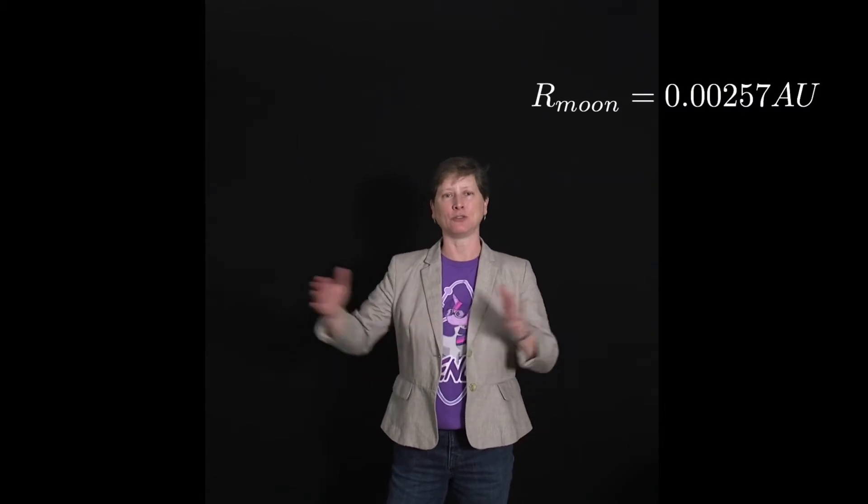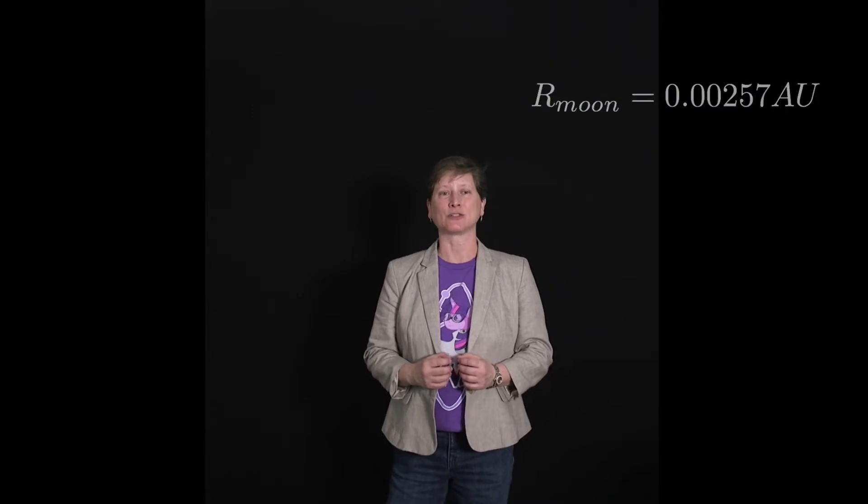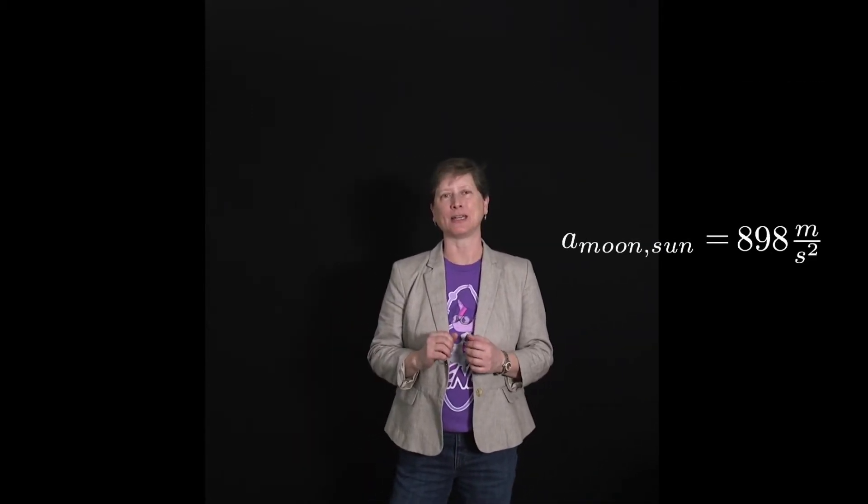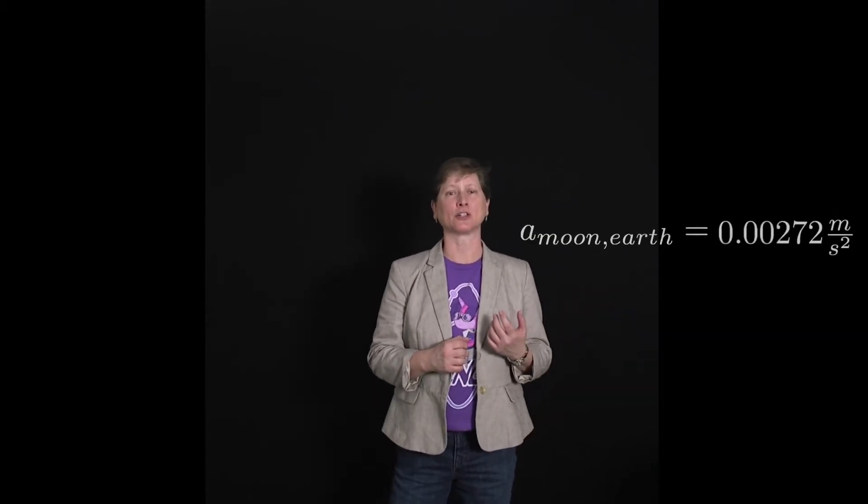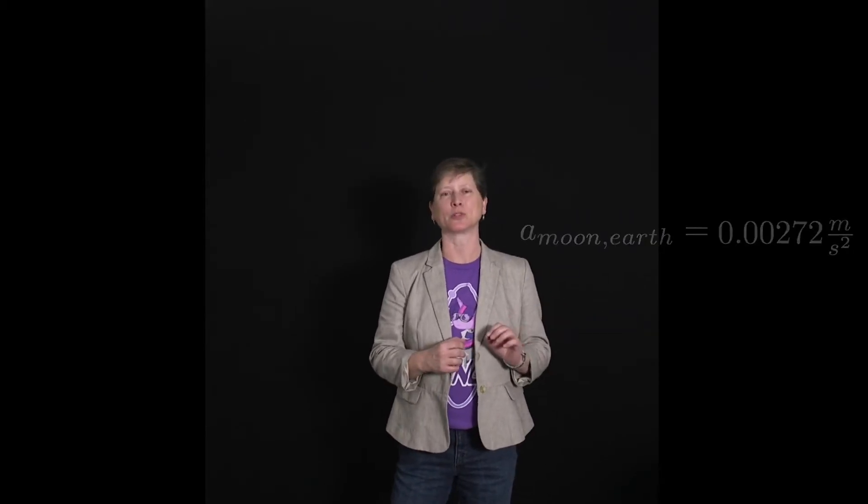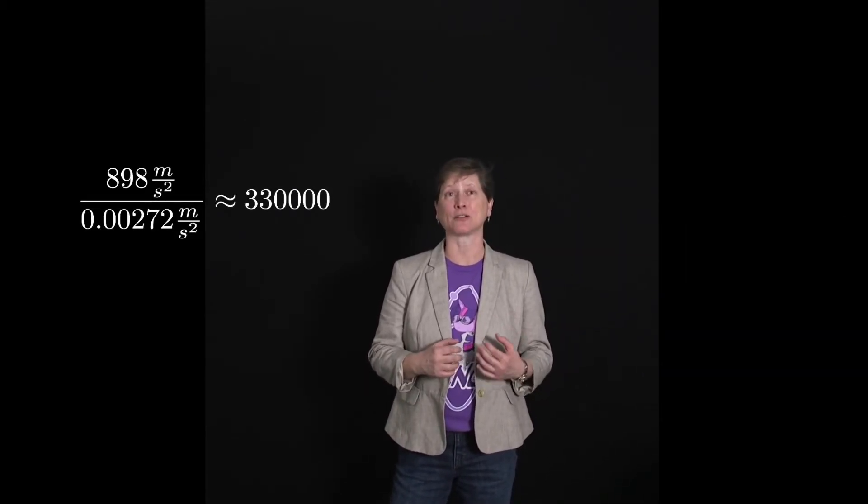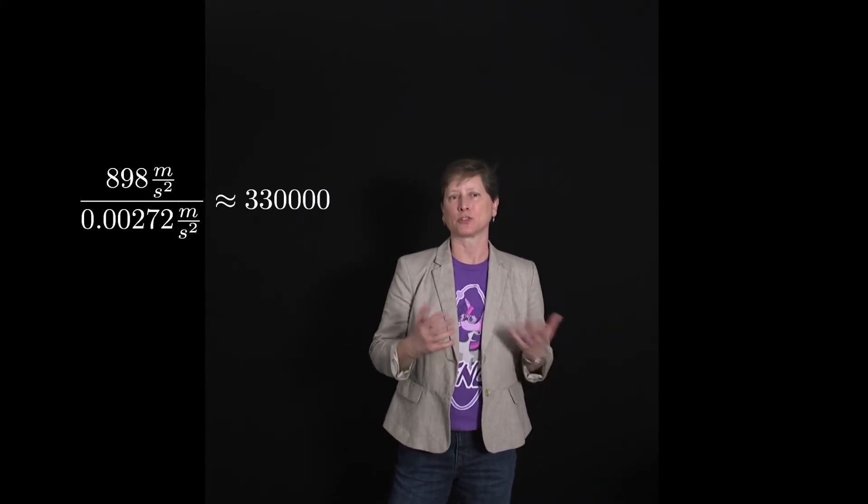Now let's figure out the final piece of the puzzle. The Moon orbits at 0.00257 AU from Earth. We can work out in a pretty straightforward fashion that an object at this distance from the Sun would experience an acceleration of 898 meters per second squared. But the Moon experiences an acceleration of only 0.00272 meters per second squared. In fact, there's a factor of 330,000 difference in these numbers. So why?